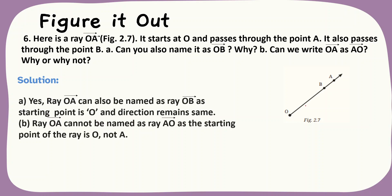Second one. Ray OA cannot be named as AO because the starting point of the ray is O, not A. That's why we can only name it as ray OA, but not as AO.